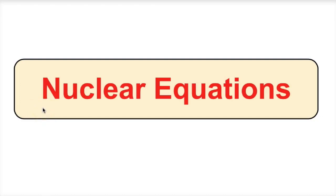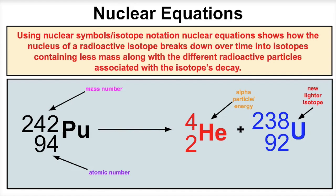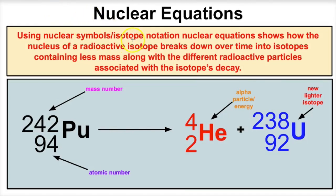Hey, you guys, this is Mr. Millings and today we're going to learn all about nuclear equations, so don't be scared — it's just some nuclear chemistry. Nuclear equations use nuclear symbols or isotope notation to show how the nucleus of a radioactive isotope breaks down over time, producing isotopes with less mass along with different radioactive particles associated with the isotope's decay.